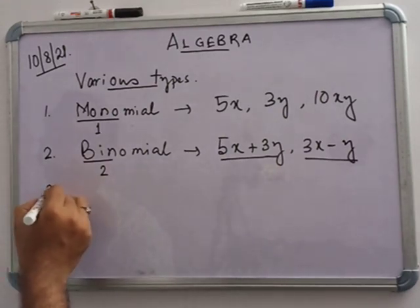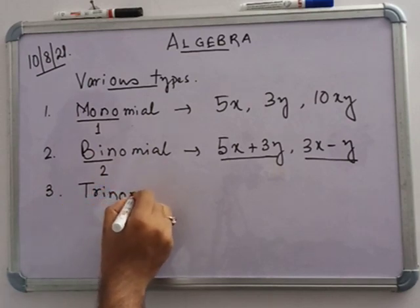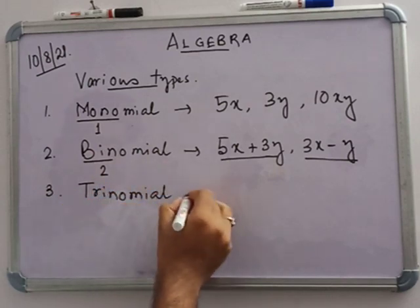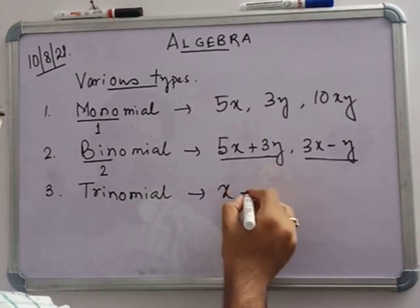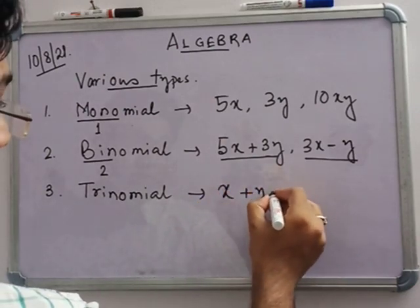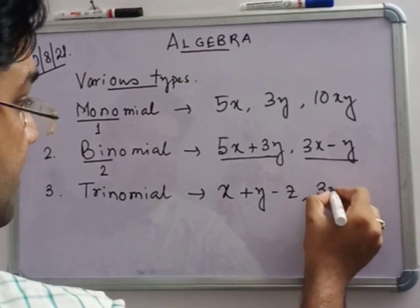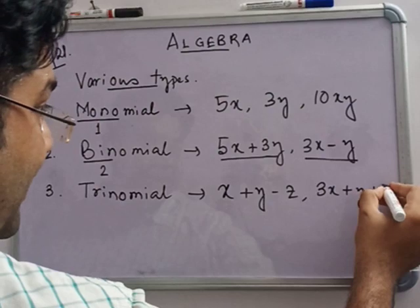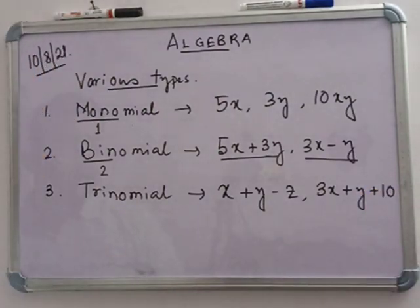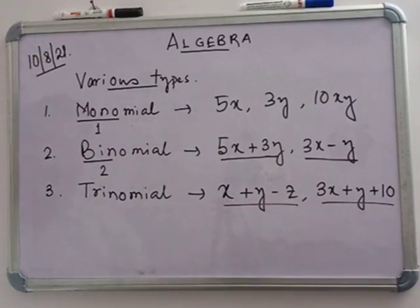Number three is trinomial. When three terms are there — suppose x plus y minus z, or 3x plus y plus 10 — these expressions with three terms are called trinomials.